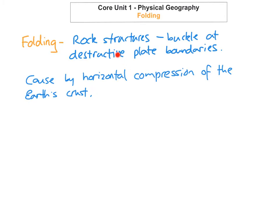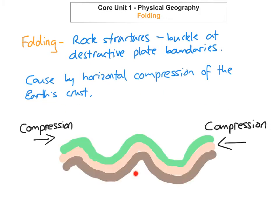A key thing to note is that large-scale folding is responsible for the highest mountains in the world. The Himalayas, which include Mount Everest, were caused to uplift because of horizontal compression as the Indian plate converged with the Eurasian plate, forming the Himalayas where we have Mount Everest, the highest mountain in the world.